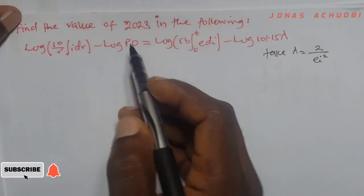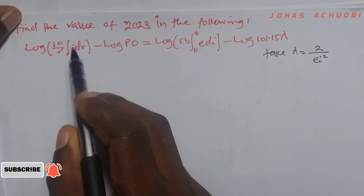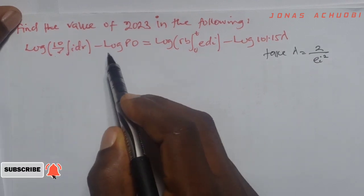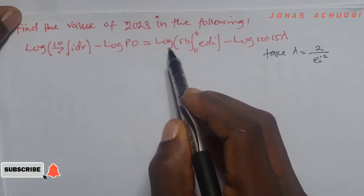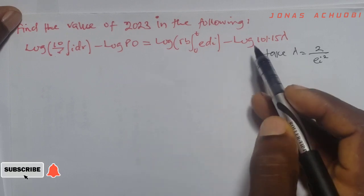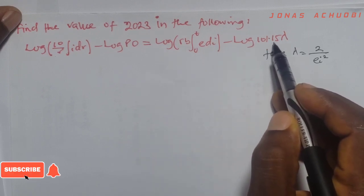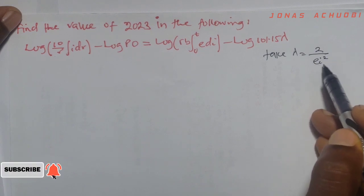We want to find the value of 2023 in the following: log 10 over r integral i dr minus log bo, bo stands for p tau b, equal log rb integral 0 to t e di minus log 101.15 lambda. We take lambda to be 2 all over ei squared.